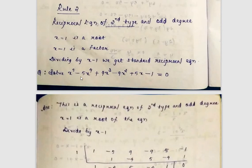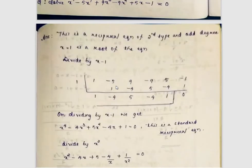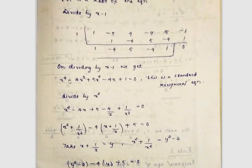For example, the coefficients 1, -1, -5, 5, 9, -9 represent a second type equation with odd degree. Since x = 1 is a root, (x - 1) is a factor. Dividing gives coefficients 1, 0, -4, -4, 5 (approximately), which is a first type even degree — a standard reciprocal equation. We divide by x², set y = x + 1/x and y² - 2 = x² + 1/x², substitute and solve.